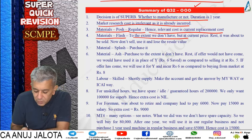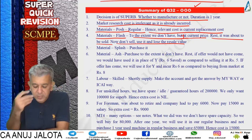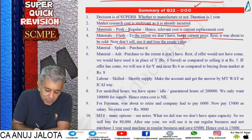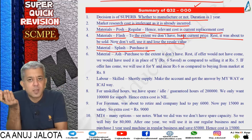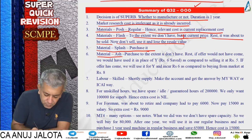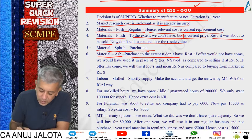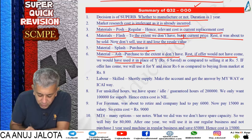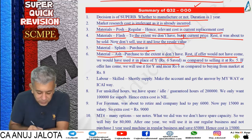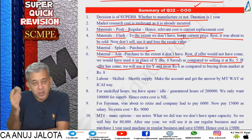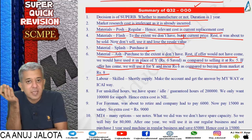Material Flash: buy at current price for whatever you don't have in stock. For stock about to be sold - don't sell, use it, and lose the resale value. Material Ash: purchase to the extent you don't have. For existing stock, if offer hadn't come we would have used it in place of Y saving 6 rupees. Since offer came, using for Y means incurring 6, which is far lower than buying from market at rupees 8.